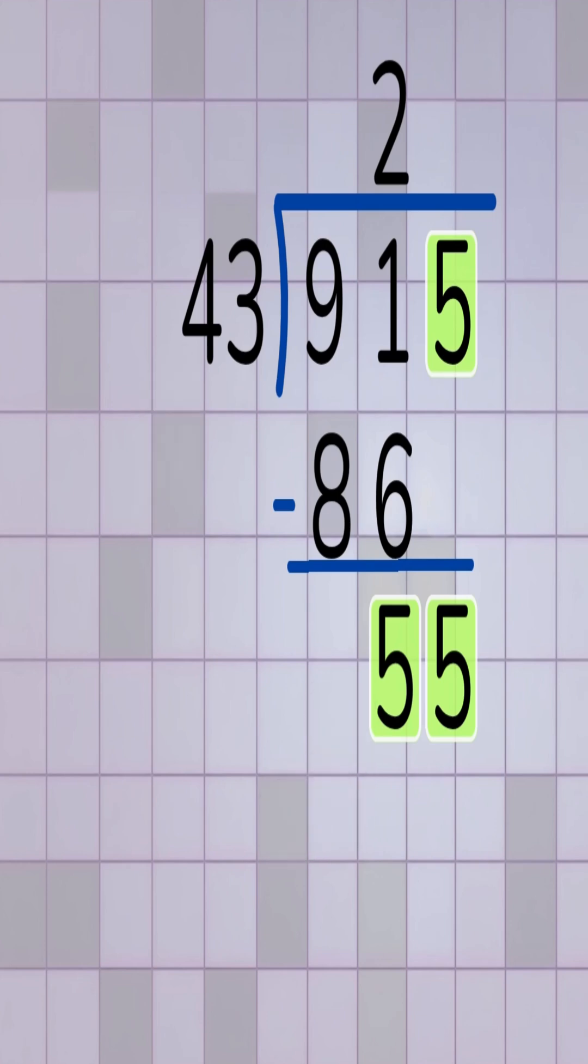Let's estimate again. 43 fits into 55 one time. 2 times 43 would be 86, which is too large. So we choose 1. Now we write 1 as the next digit in our answer. So far, our answer is 21.